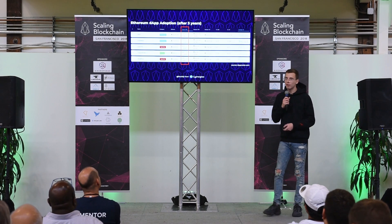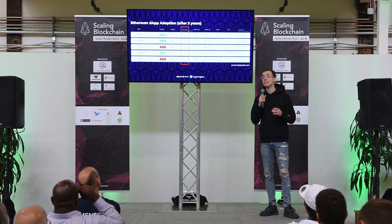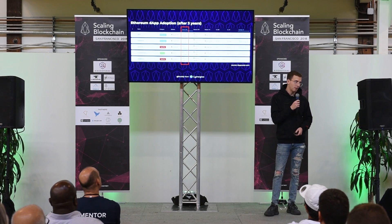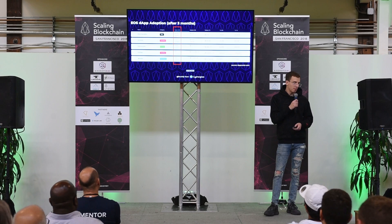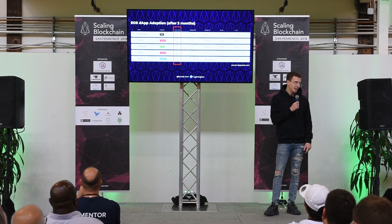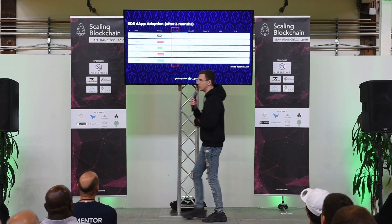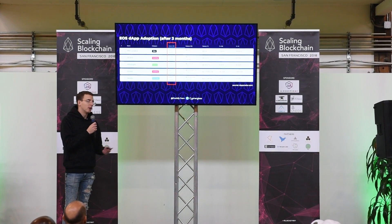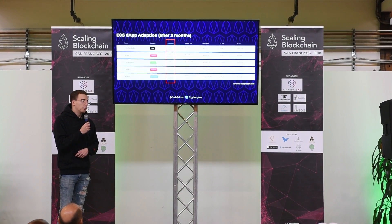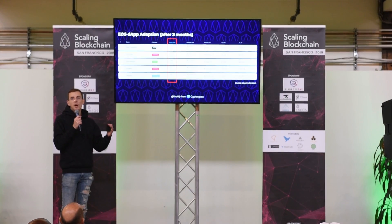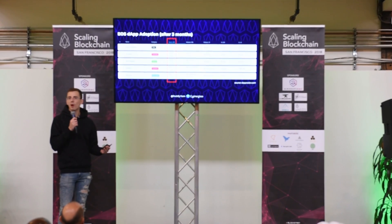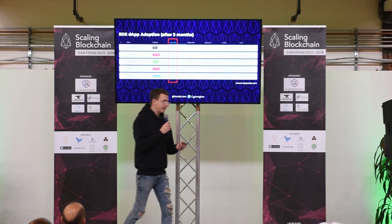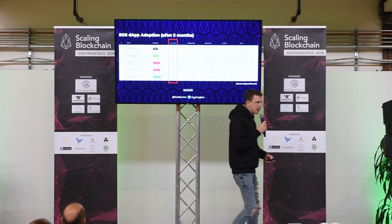As a reminder, Ethereum dApp adoption after three years shows less than 2,000 users for the top platform. Here's a screenshot from two months ago — EOS dApp adoption after just three months. The top dApp had more than 8,000 users, with several others falling in line with Ethereum's numbers. So in three months, EOS dApps made about the same progress as Ethereum made in three years, thanks to that pyramid of problem solving.